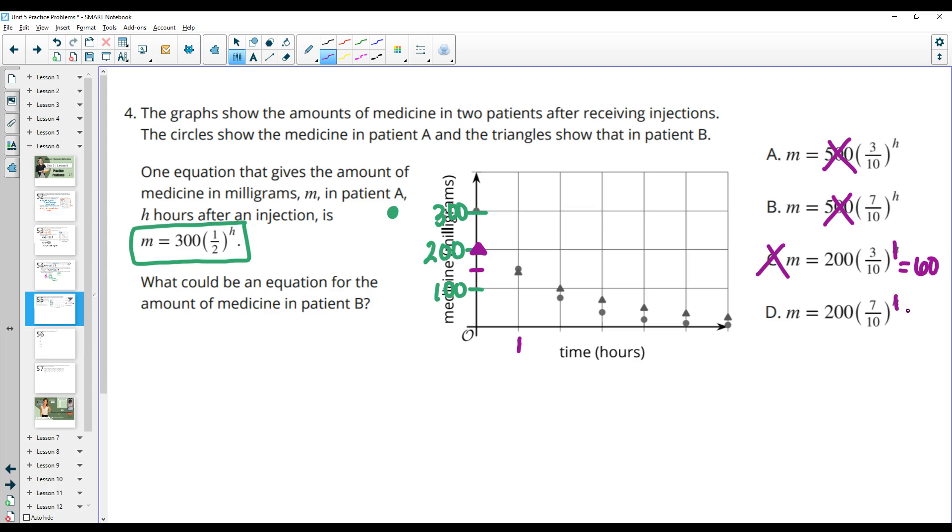Well, this number right here where it's at has to be closer to 150. So this one's likely wrong. And if I plug in one here, when I do 200 times 7 tenths to the first, I get 140, which makes more sense for where this triangle is. That looks like it's more at 140. So that tells me that D is the closest equation.